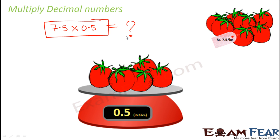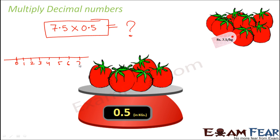So this is a place where we need to multiply decimal numbers, and we should know how to do that. Now let us compare the multiplication of decimal numbers with the multiplication of normal whole numbers. How do we represent the multiplication of whole numbers on a number line? So let us say this is a number line: 0, 1, 2, 3, 4, 5, 6, 7, 8, and so on.